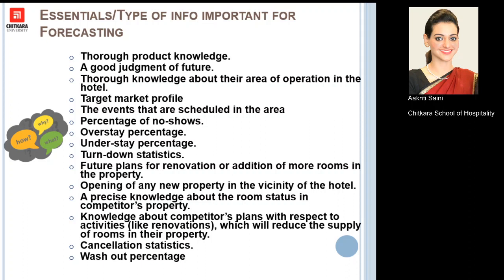Any major event scheduled in the area — such as a film fair, Commonwealth Games, Olympics, or any major event — helps fill rooms in the hotel. We also need to forecast the approximate number of no-shows, overstay percentage, understay percentage, and turn-down statistics. A turn-down occurs when a walk-in guest wants a room but we do not have one available, so we turn down their request.